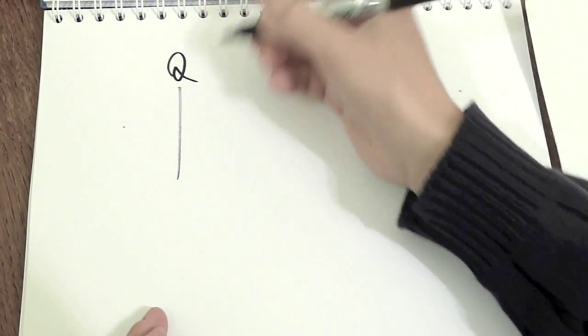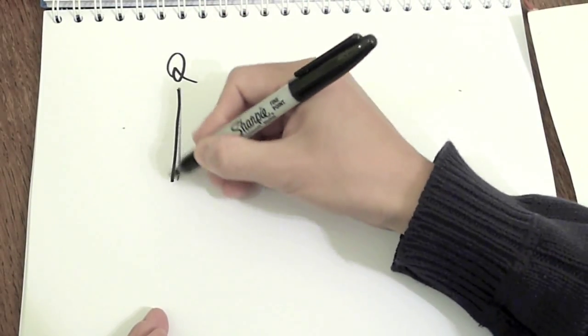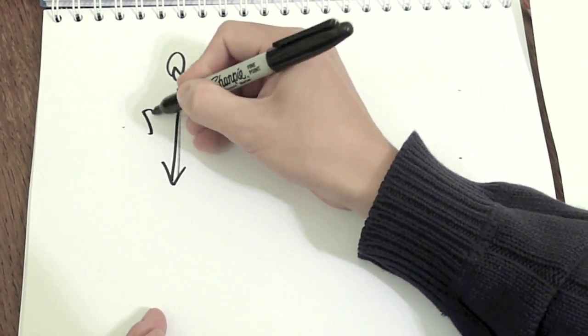Say we have a manifold, q, and we have a map, not a map, but a function, a real-valued function, f.